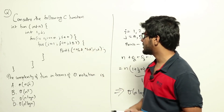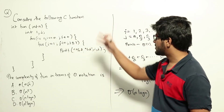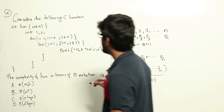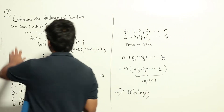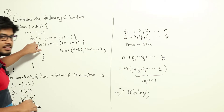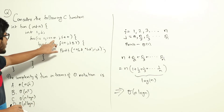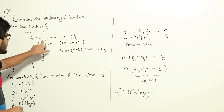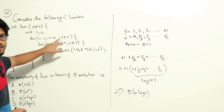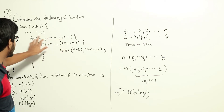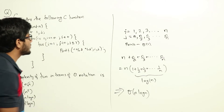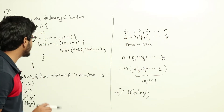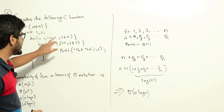Let us see how to calculate the time complexity. Looking at the function, i changes from 1 up to n in increments of 1. So initially i is 1, then i becomes 2, then i becomes 3, up to i becomes n — that is the first for loop. So i will take values 1, 2, 3, and so on up to n.